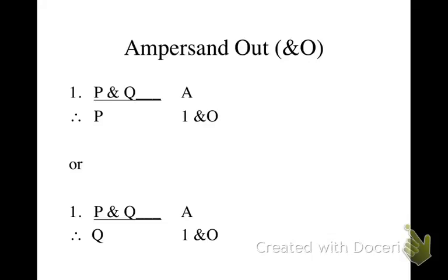This video will explain the rule of Ampersand Out. Ampersand Out lets us take apart conjunctions. So if we have the formula P and Q, then we can derive either the formula P or the formula Q by And Out.